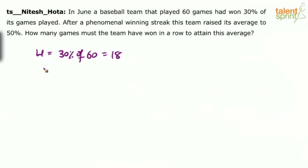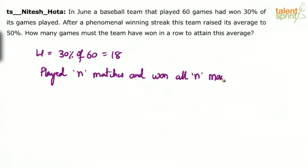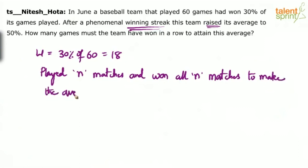Now, let us assume they have played N matches after this and won all N matches. He says after a phenomenal winning streak — winning streak means that every match they played after, they have won it. They played a lot of matches and won all those matches such that the average came to 50%. So they played N matches and won all N matches to make the average 50%.